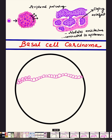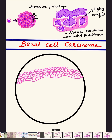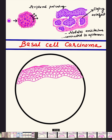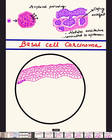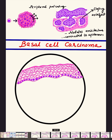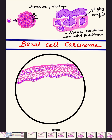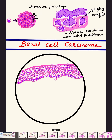We begin by drawing the epidermis. The epidermis is made up of stratified squamous epithelium with multiple layers — a basal layer, then multiple polygonal cell layers, and at the top the stratum corneum, which is keratinized. So the topmost layer is keratin. We draw this stratified squamous epithelium first, then show the connection of the tumor to the epidermal layers.